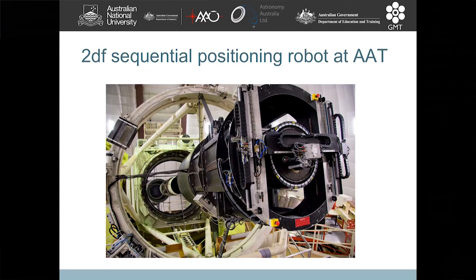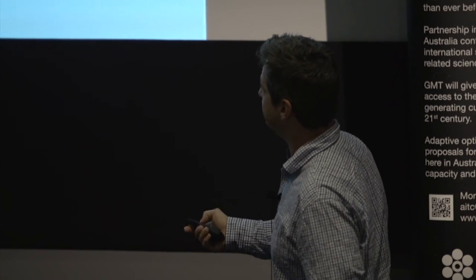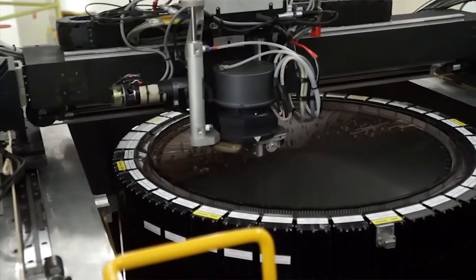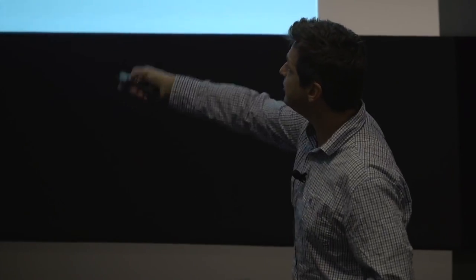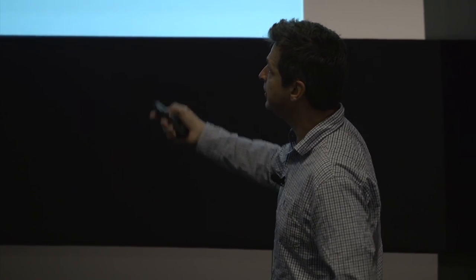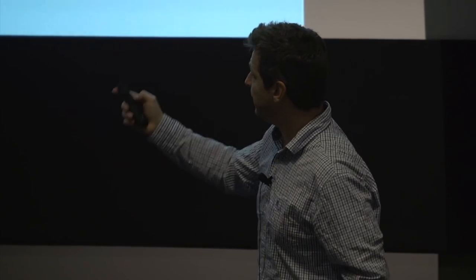And this is what 2DF does. Here's the primary mirror of the telescope. We're looking down. Light's bouncing up here. And then we have some robot here, which does the configuration. Here we have a field plate, we call this. It's in the middle of the telescope. And we've got a little robot. You can see these fibers. It's positioning 400 fibers individually. And it does this sequentially, so it's one after a time. It's quite slow. It's as fast as it could be for its time, which was built about 15 years ago. But it takes some time to position all of these fibers very accurately in the focal plane of the telescope.